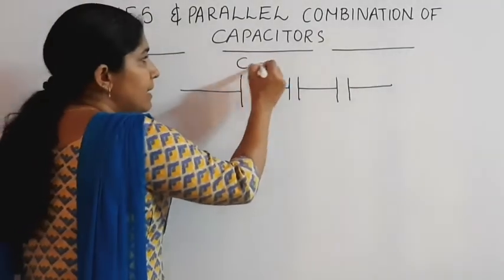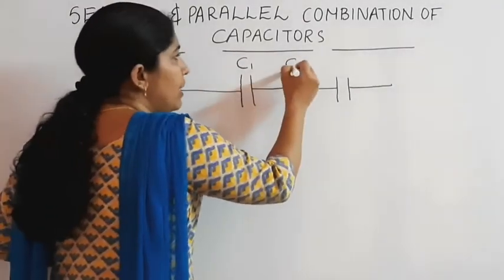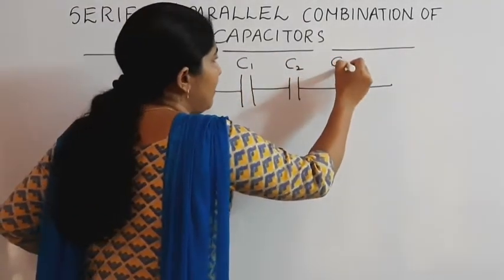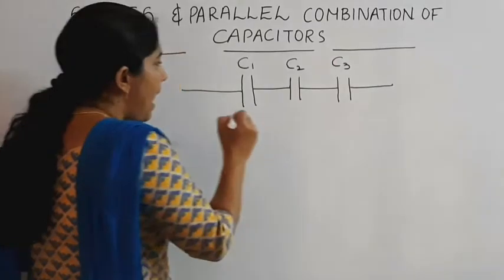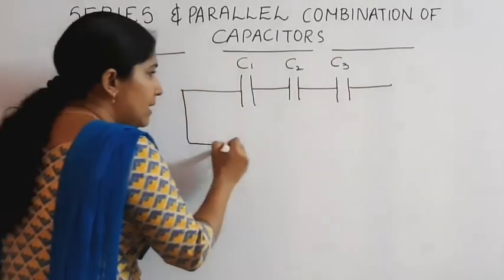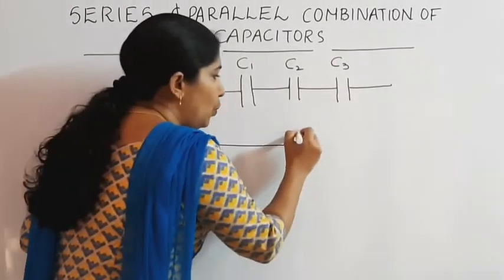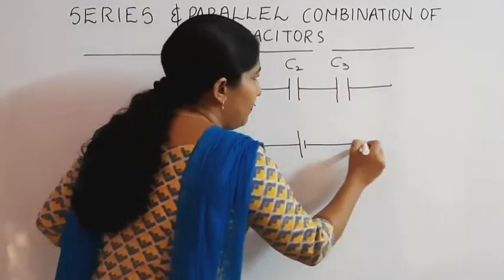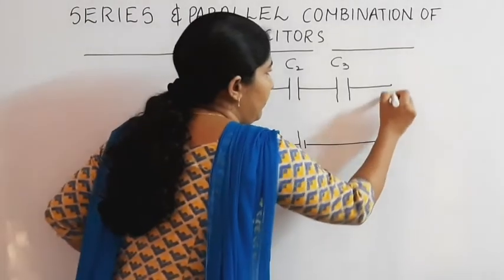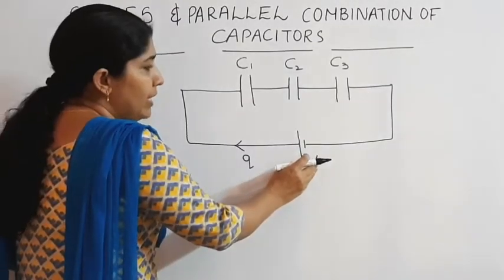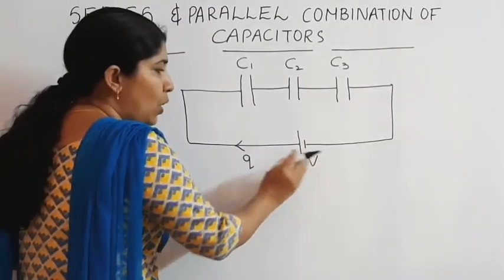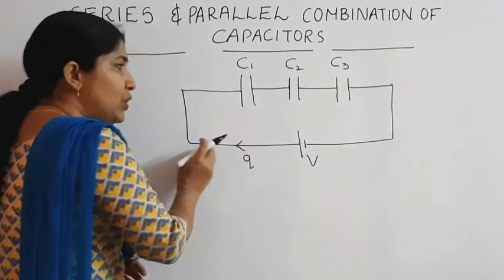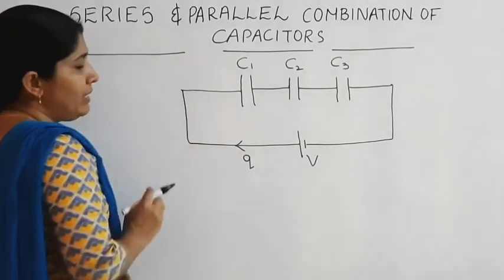The capacitance here is C1, here C2, and here it is equal to C3. These capacitors are connected to a voltage source V. Now the circuit is closed, so the charge begins to flow through this circuit.